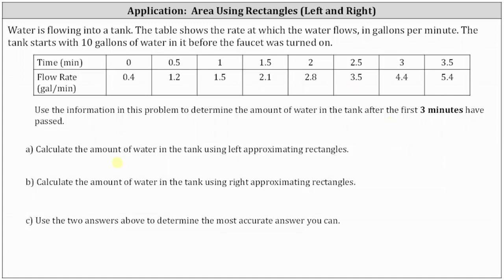Part A, we're asked to calculate the amount of water in the tank using left approximating rectangles. Part B, we're asked to use right approximating rectangles. And then Part C, we're asked to use Parts A and B for the most accurate answer.